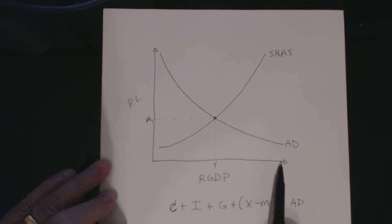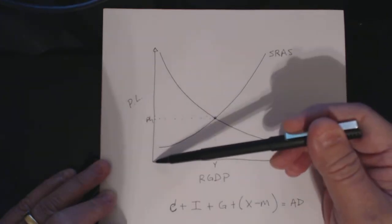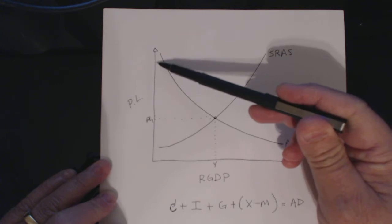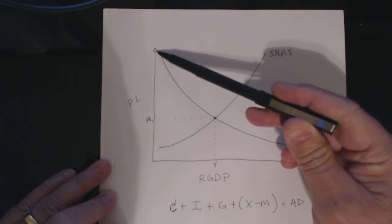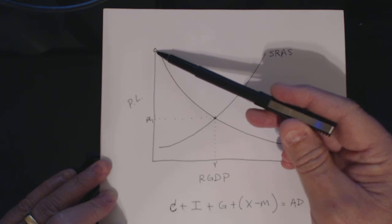On the y-axis we have price levels, and so as price levels rise overall, then we would have a measure of inflation. As price levels decrease, we would have a measure of deflation.